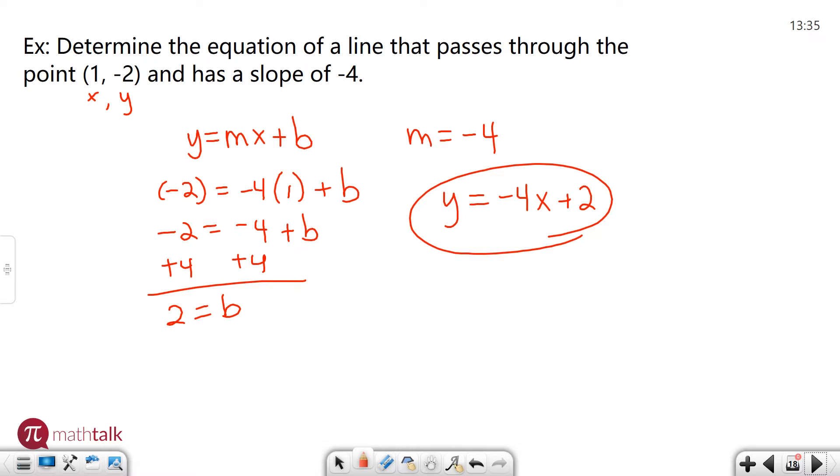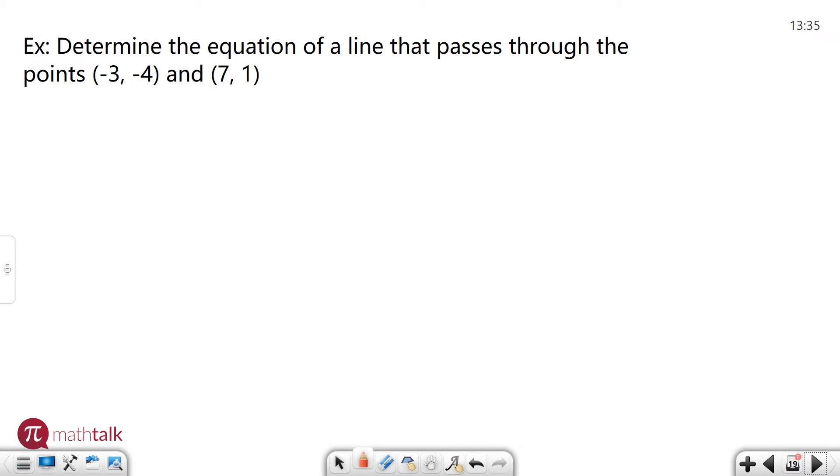Let's look at another example. Determine the equation of a line that passes through the points (-3, -4) and (7, 1). So this time they don't give us the slope, we have to find it first. The process is the same but there's just a couple extra steps.